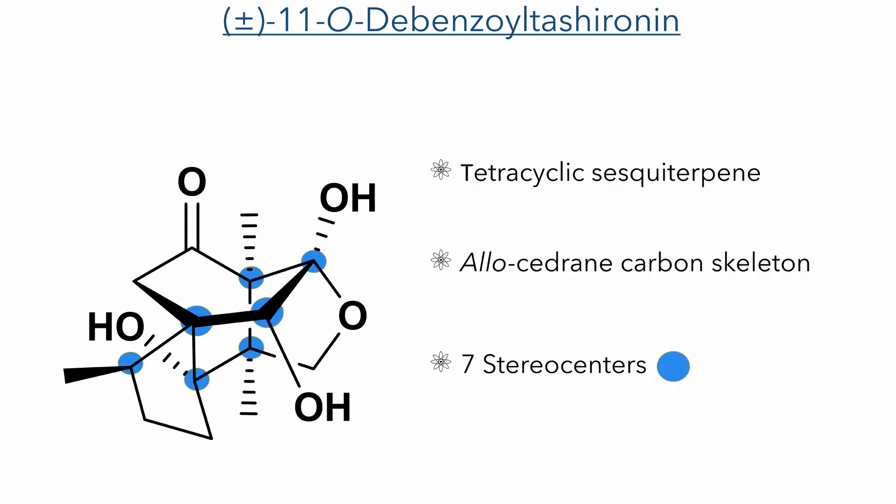The molecule itself is a tetracyclic sesquiterpene featuring an uncommon allo-cedrane carbon skeleton. This molecule possesses seven stereocentres, which has made it the target of several total syntheses. The work we will look at offers a new strategy to complete this tetracyclic structure in a highly stereocontrolled fashion with minimal use of protecting groups.